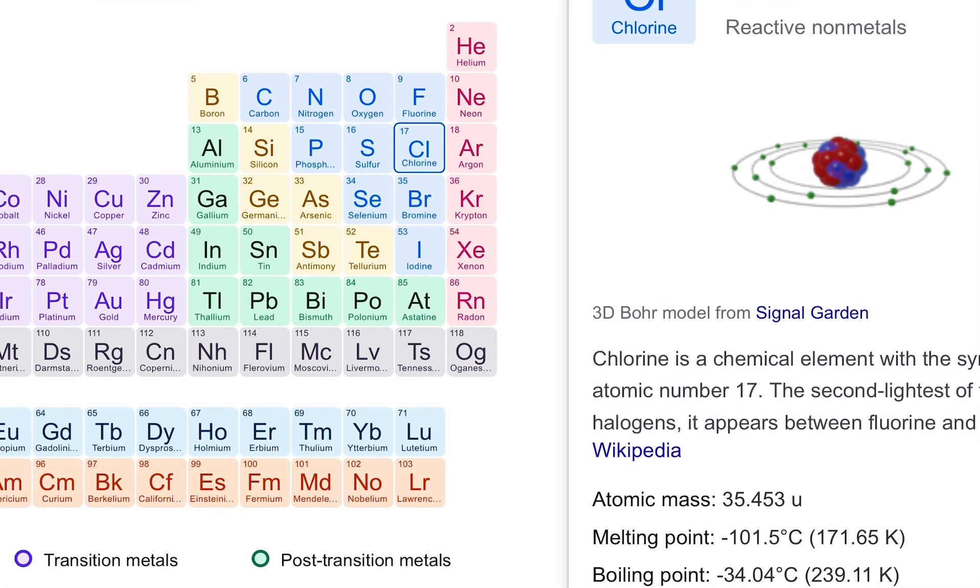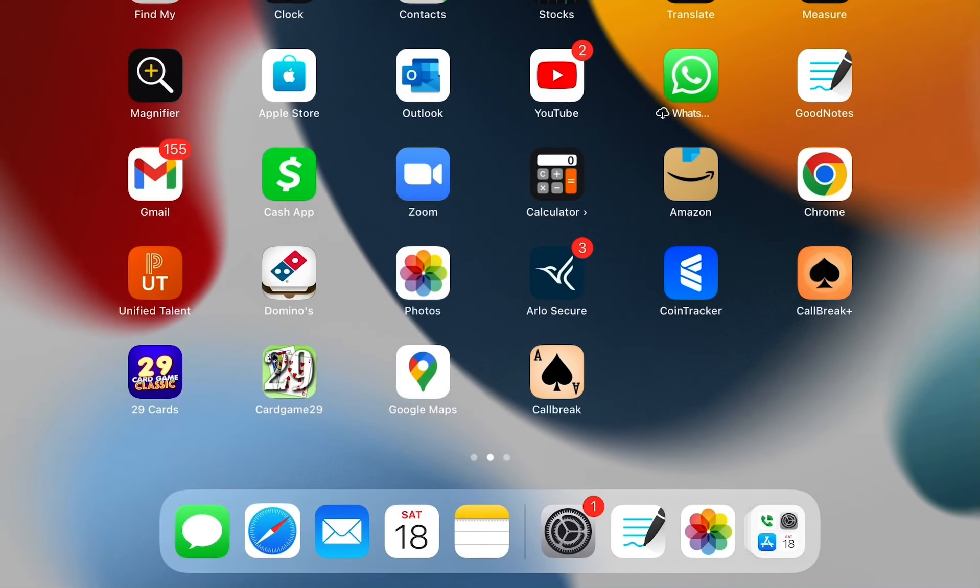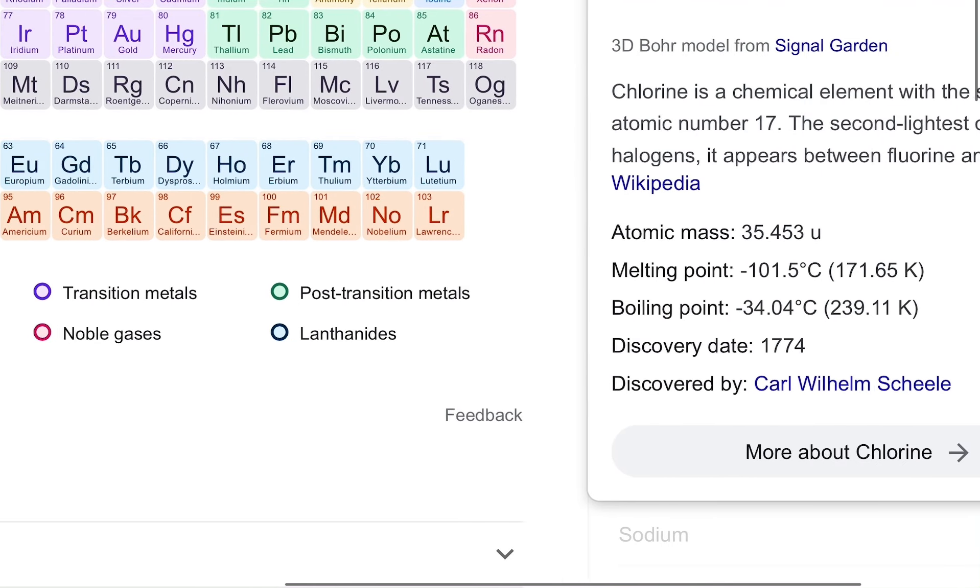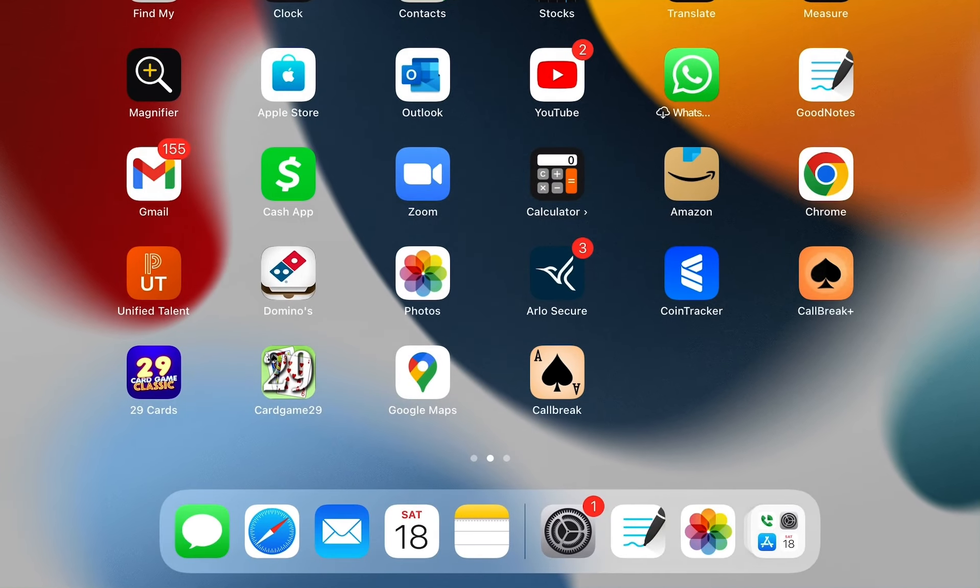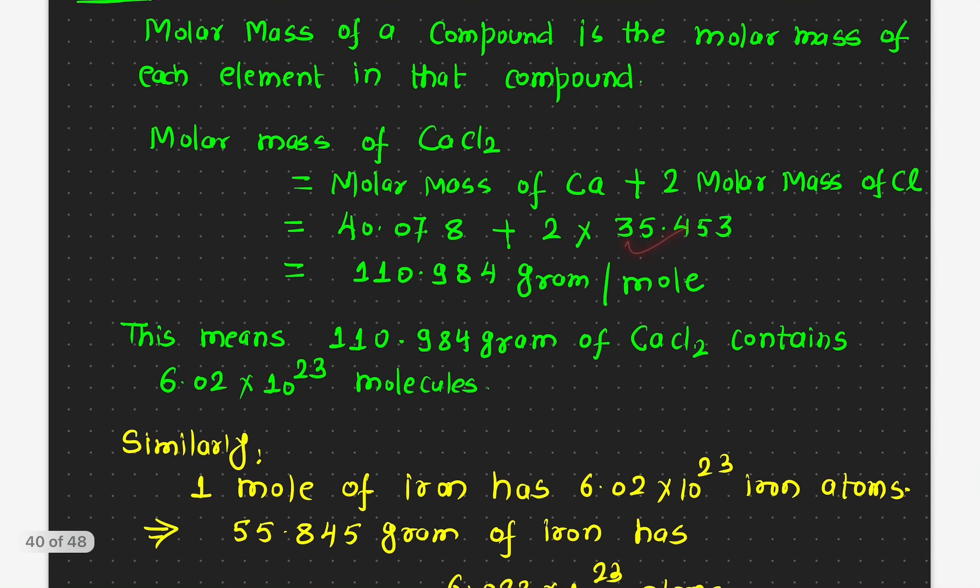If you look here, the chlorine, that is 35.453. Or you can also write, it's given here too, atomic mass here 35.453. And that's what I have written down here.